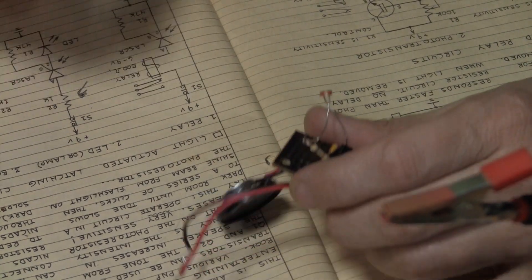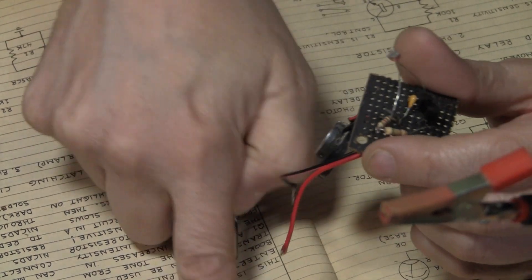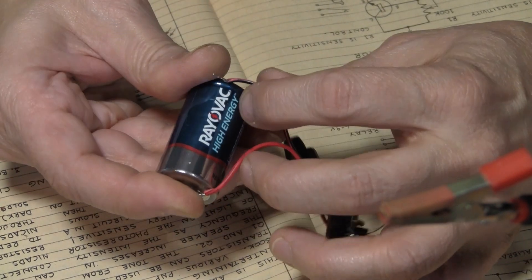So I went ahead and made the circuit because it wasn't working. Then I realized it's not for a 9 volt. It's supposed to be this. Just one and a half.